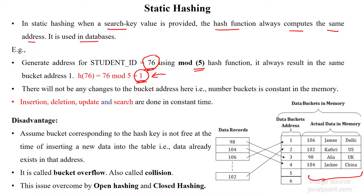If you want to search, modify, or delete these records, the 76th student's values will always be accessed from index number 1. Similarly, for student number 98: